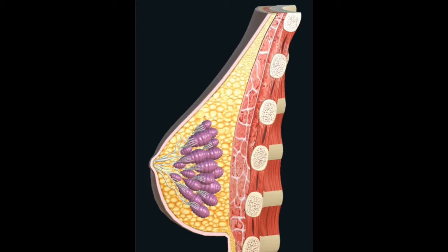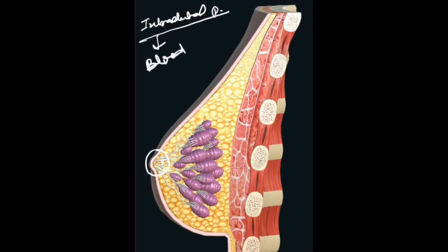Now let us discuss intraductal papilloma. Intraductal papilloma is a benign tumor which generally occurs near the areolar region. It occurs in the duct of the mammary gland. Intraductal papilloma is the most common cause of blood-stained discharge from the nipple. The treatment of intraductal papilloma is microdochectomy.